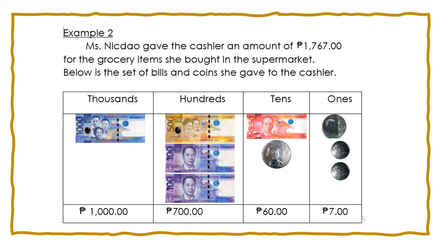Let us try the next example. Ms. Nick Dow gave the cashier an amount of 1,767 pesos for the grocery items she bought in the supermarket. Below is the set of bills and coins she gave to the cashier. In counting an amount of money, we can group the money according to their place value. We count starting from the highest, then simply add all the values together. We have 1,000. For the hundreds place, we have 500 and 200, giving us 700 pesos. On the tens place, we have the 50 and the 10-peso coin; if we put together 50 and 10, we get 60 pesos. On the ones place, we have the 5-peso coin and 1-peso coin; if we put together all these coins, we get 7 pesos.